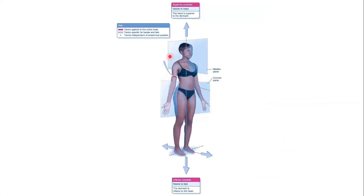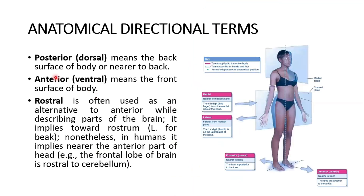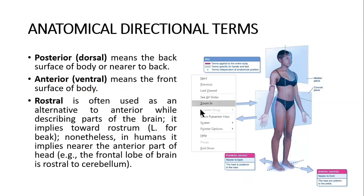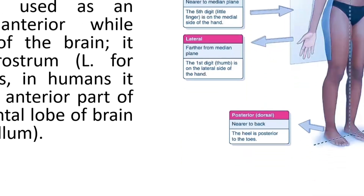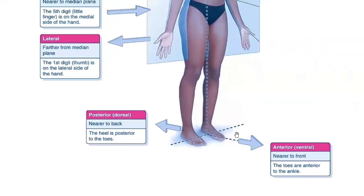Posterior or dorsal means the back surface of the body, or nearer to the back. Anterior or ventral means the front surface of the body. For example, the heel is posterior to the toes, and the toes are anterior to the ankle.